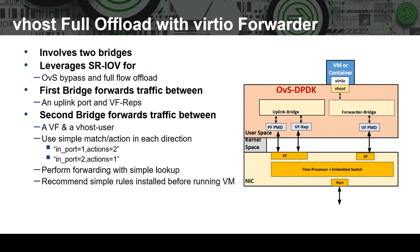Let's take a look at the configuration and various components involved in Virtio Forwarding using vHost and full offload. As shown in the diagram, we use two bridges in this configuration. We use SRIOV and OVSDPDK full offload. The first bridge forwards traffic between an uplink port and VF representers. The second bridge forwards traffic between a VF and a vHost user port. The VF is connected internally in hardware to the VF representers in the first bridge by configuring switchdev mode or full offload in the NIC.